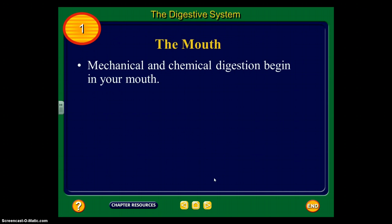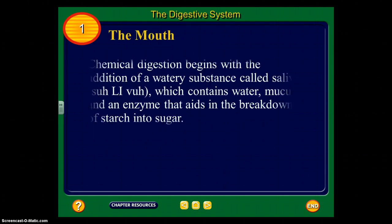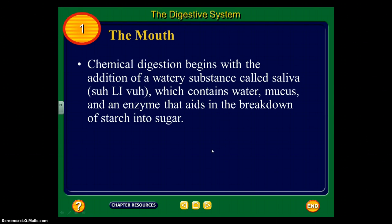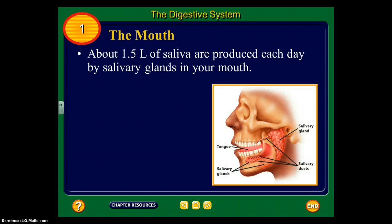Let's start with the mouth. Both types of digestion — mechanical and chemical — occur in the mouth. Mechanical digestion happens when you chew your food with your teeth and mix it with your tongue. Chemical digestion is when you're adding a chemical substance. With the addition of a watery substance called saliva, which contains water, mucus, and an enzyme that aids in the breakdown of starch into sugar, that's how chemical digestion begins in the mouth.